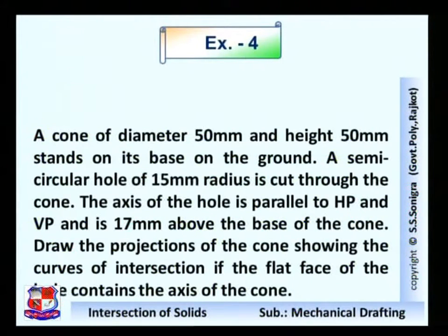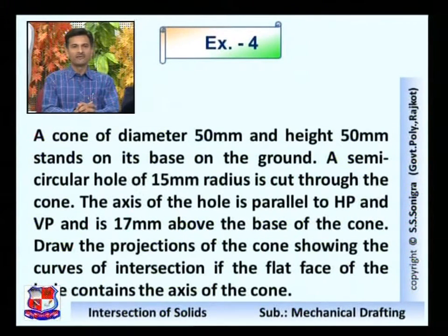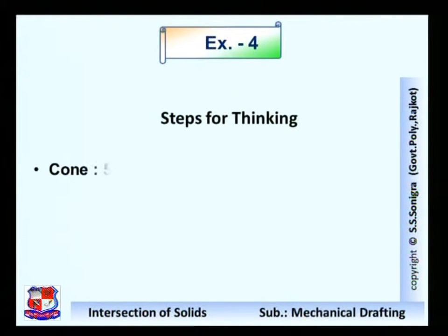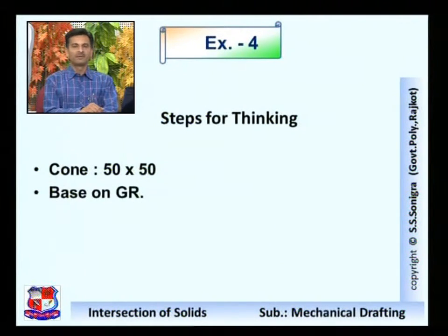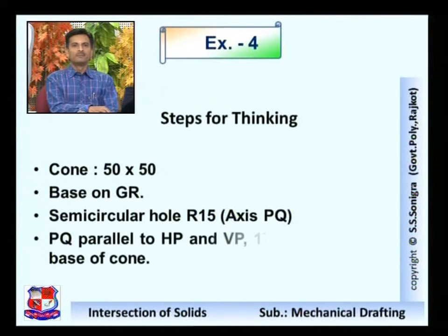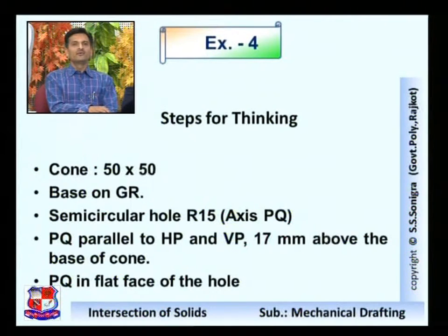Next problem, example number 4. A cone of diameter 50 mm and height 50 mm stands on its base on the ground. A semicircular hole of 50 mm radius is cut through the cone. The axis of the hole is parallel to HP and VP and is 17 mm above the base of the cone. Draw the projections of the cone showing the curves of intersection if the flat face of the cone contains the axis of the cone. The axis PQ is parallel to HP and VP, 17 mm above the base, and PQ lies in the flat face of the hole.